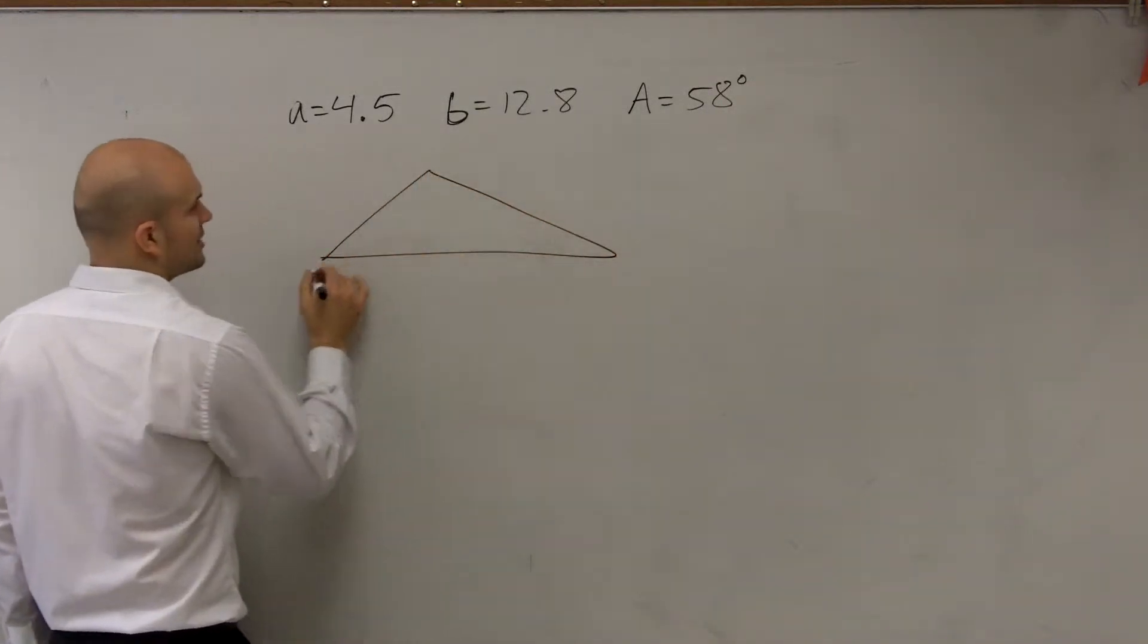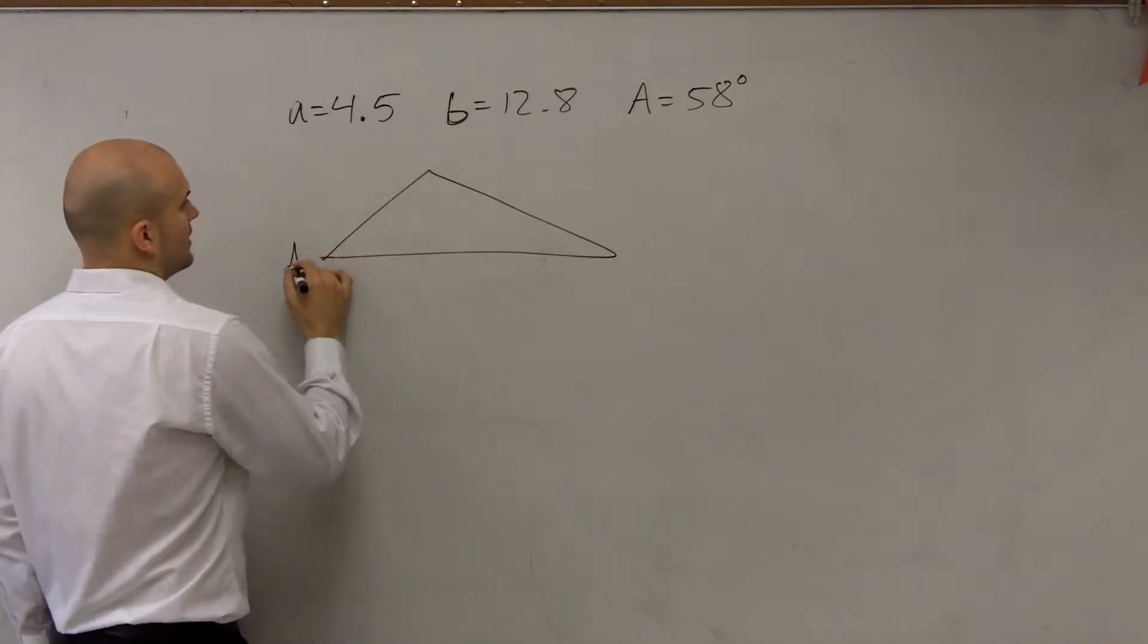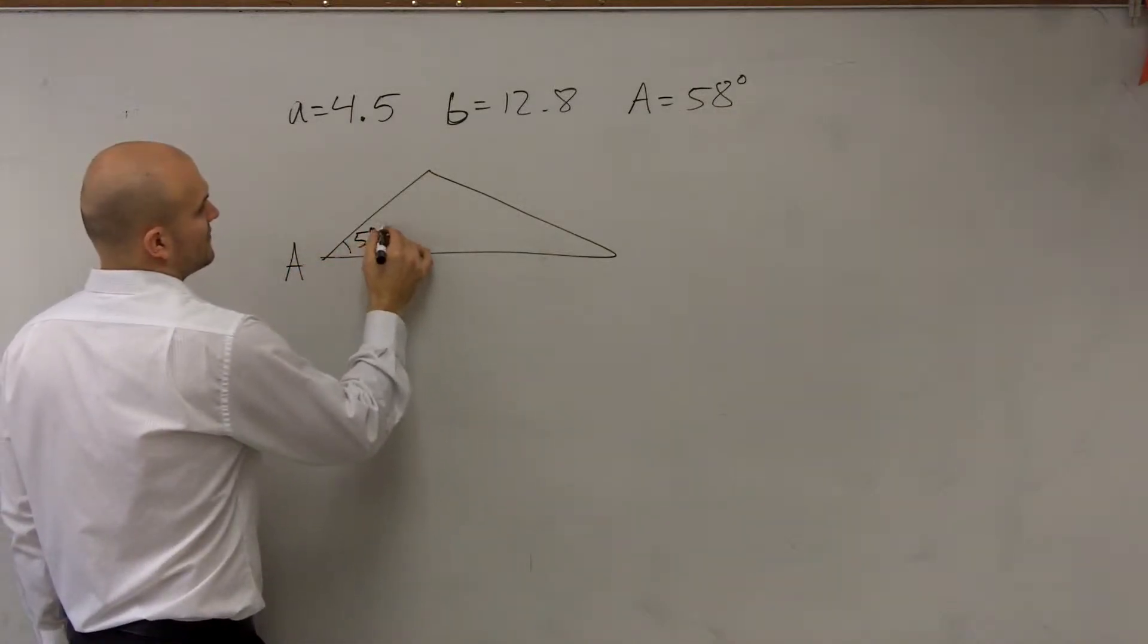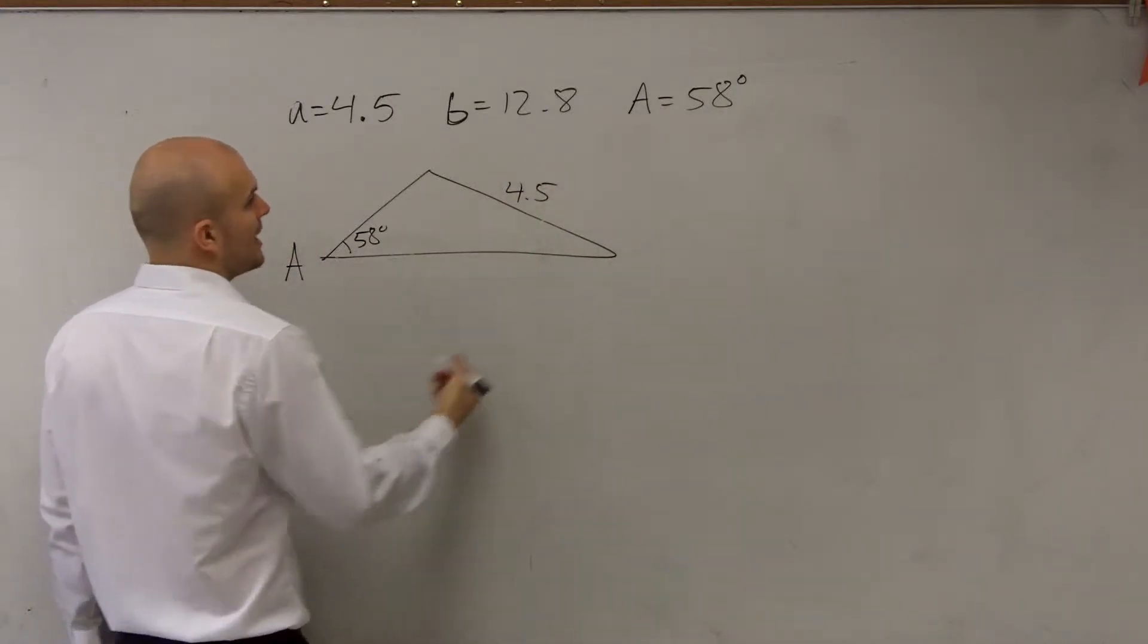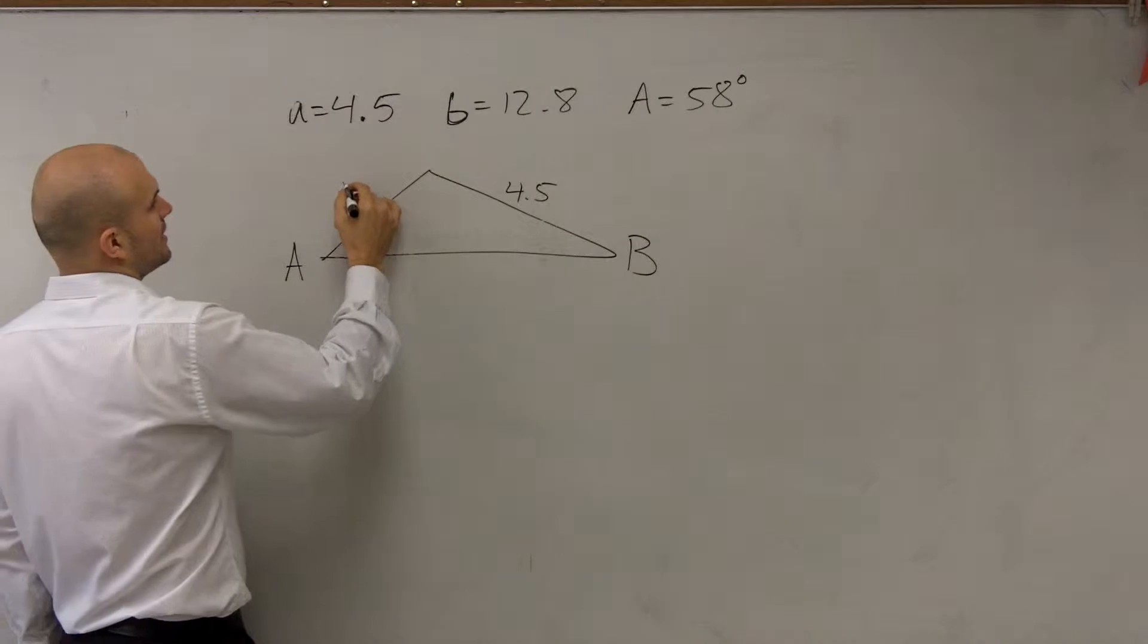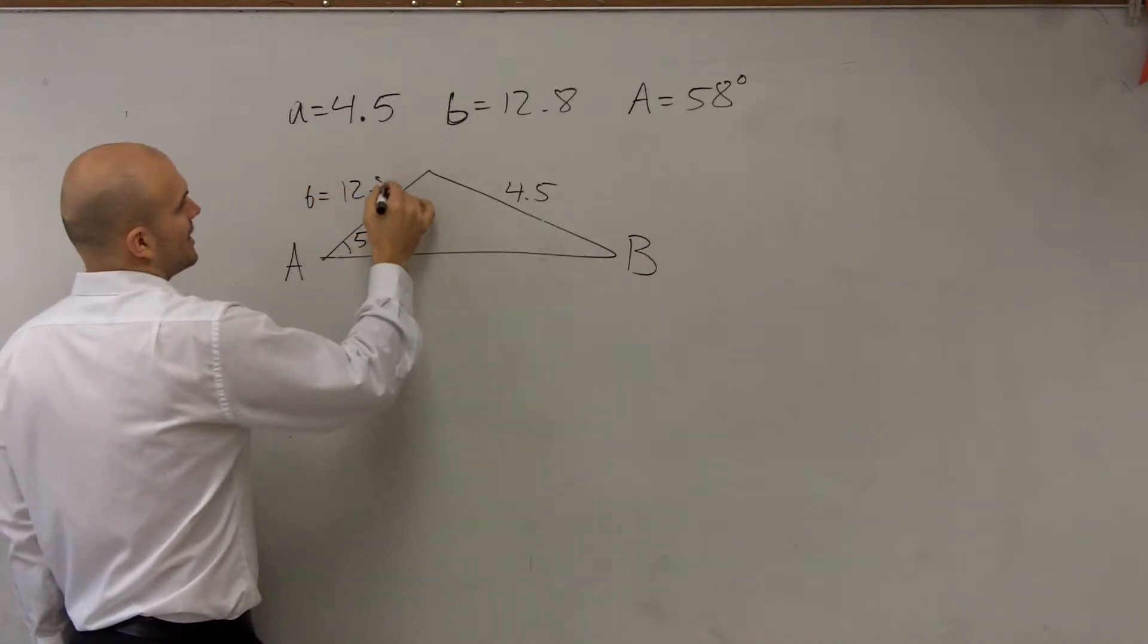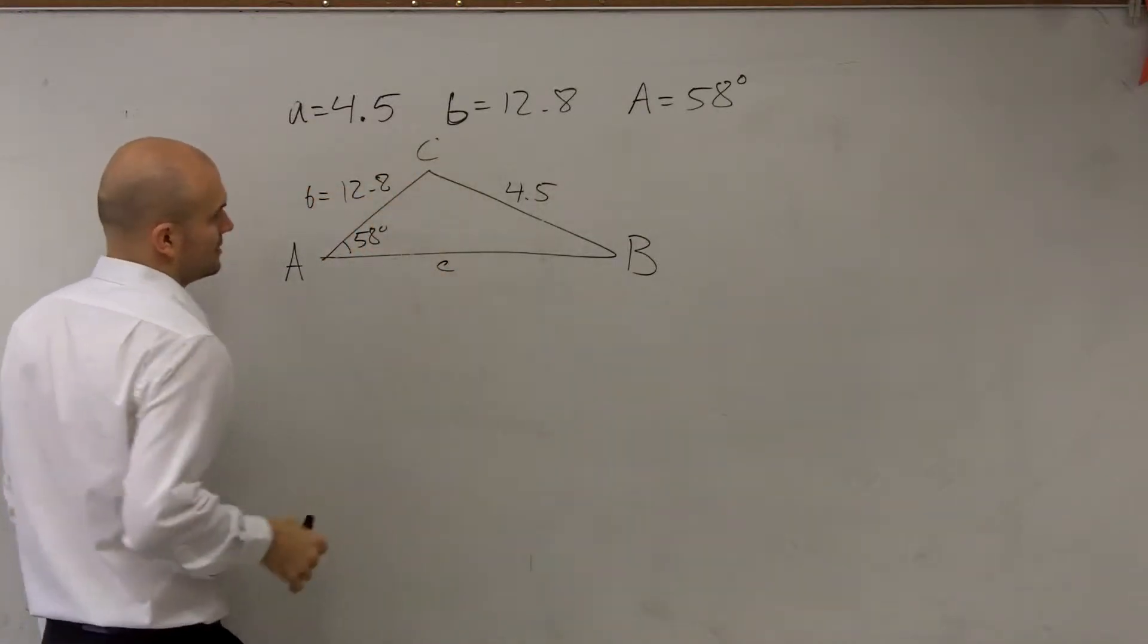So I'll just draw a generic oblique triangle, where I'll have here's A, which is 58 degrees. Here is 4.5. And we'll say here's angle B, which will be, and then B's here, which will be 12.8. So we'll call this C and then that little c.